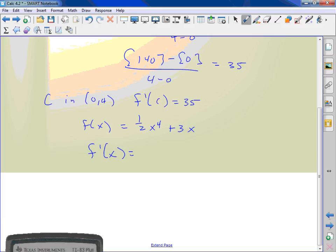What's the derivative? Two x cubed plus three. So we know that 2x cubed plus 3 has to equal 35. So I have 35 equals 2x cubed plus 3, and I'll solve for x.